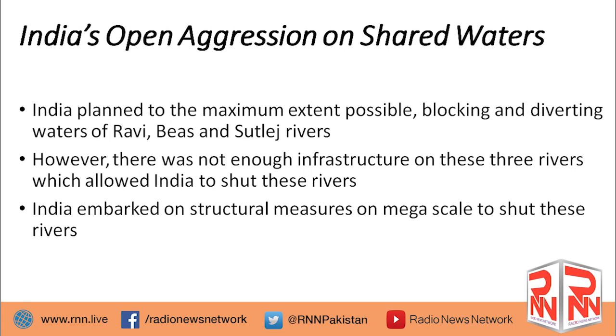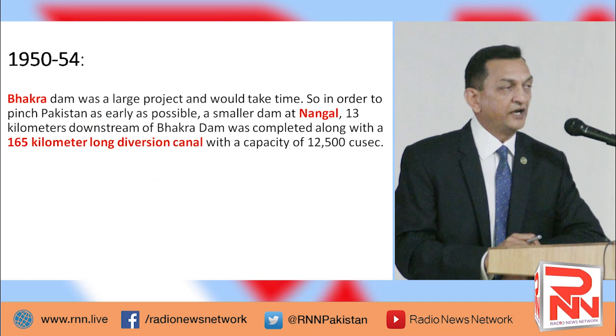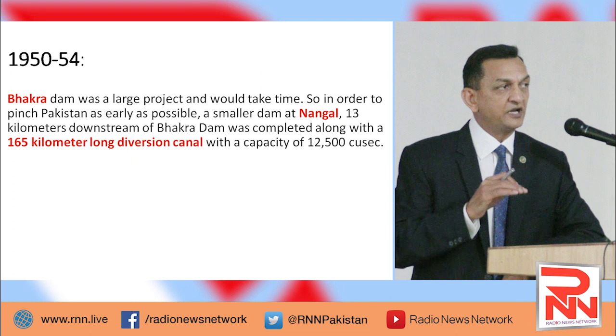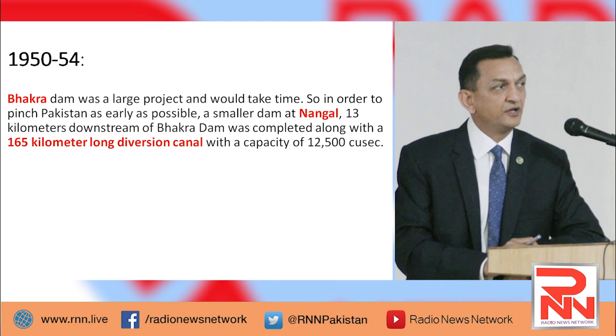India made it clear they were going to shut these rivers — do what you can. Now remember the treaty was signed in 1960, but between 1950 and 1954 India had already started work on Bhakra Dam on River Satlaj. It was a very large dam, about the size of Tarbela Dam. By building this dam, India would become capable of completely shutting down the Satlaj River flowing into Pakistan. This Bhakra Dam was originally conceived by the British back in 1901-02.